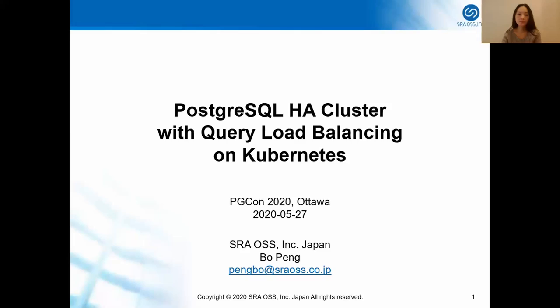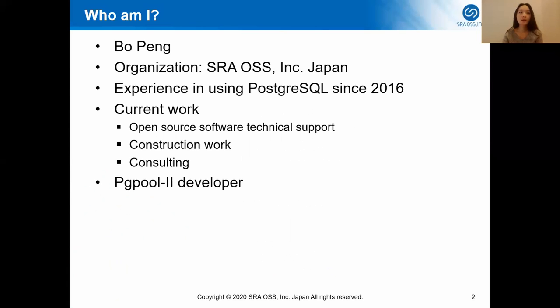Hello everyone. Today I would like to talk about how to build a Postgres high-availability cluster with query load balancing on Kubernetes. I'm Bo Pen. I'm working for SRA OSS in Japan and I have been using Postgres since 2016. Currently I focus on OSS technical support, project construction and consulting. I'm also a PGPool developer, in charge of PGPool release management, documentation, bug fix, and the Postgres parser part of PGPool.